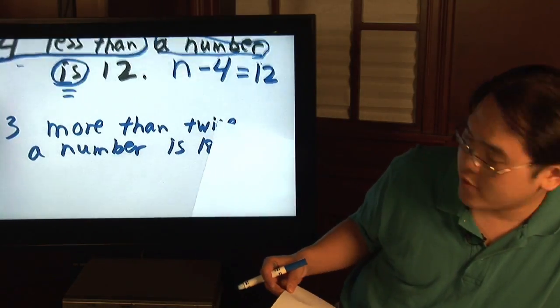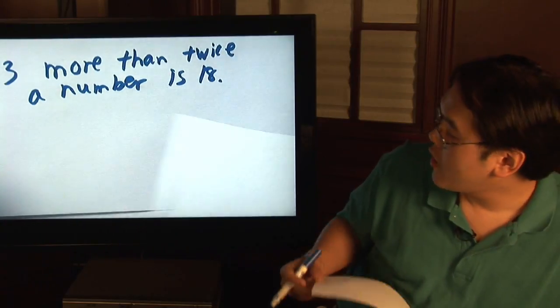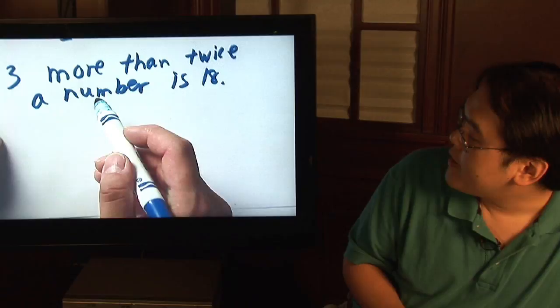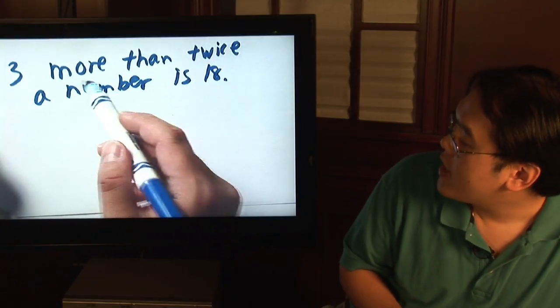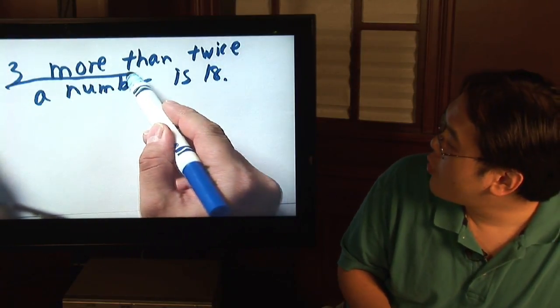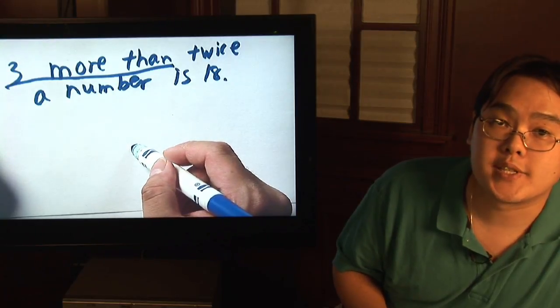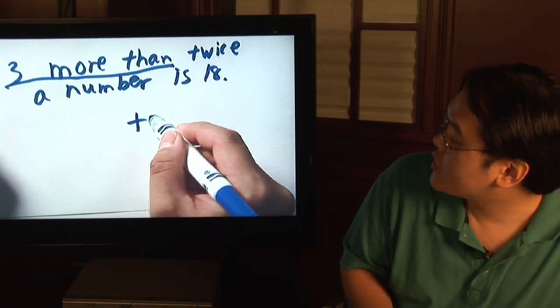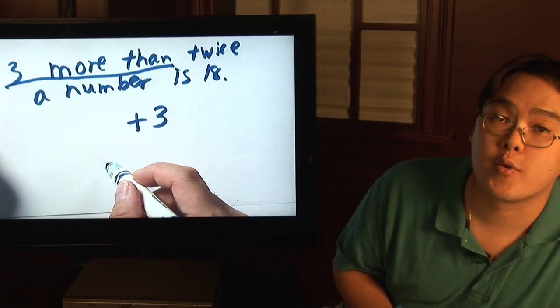Now here's another example for you. Three more than twice a number is eighteen. Now we did less than up there a minute ago. So now three more than, if a number less than means subtraction then three more than would mean addition. So there's going to be a plus three, that's what the three more than represents.